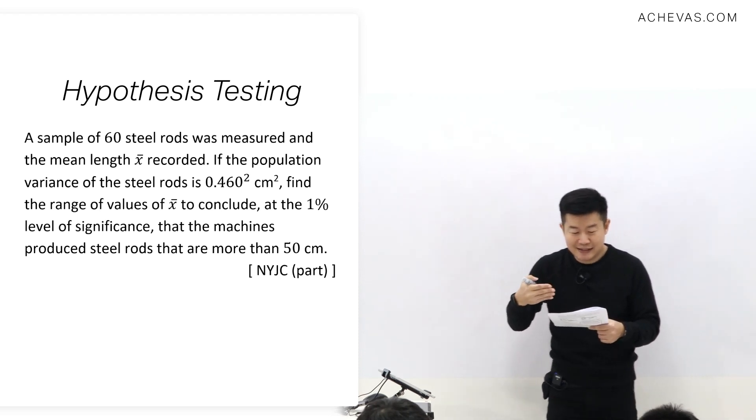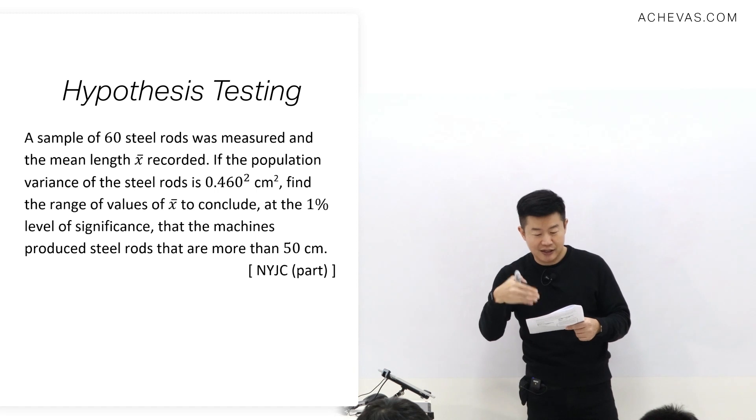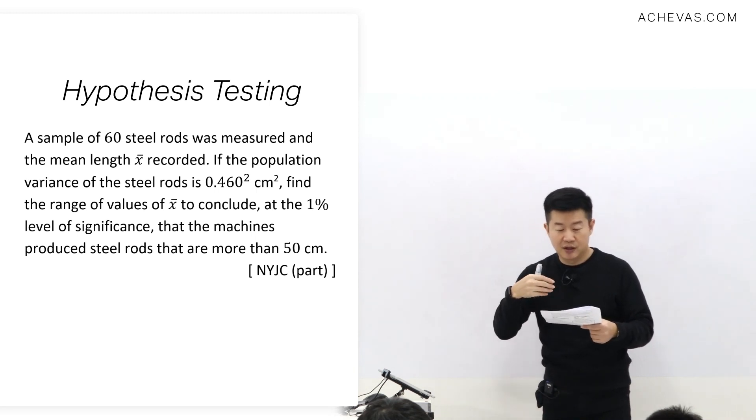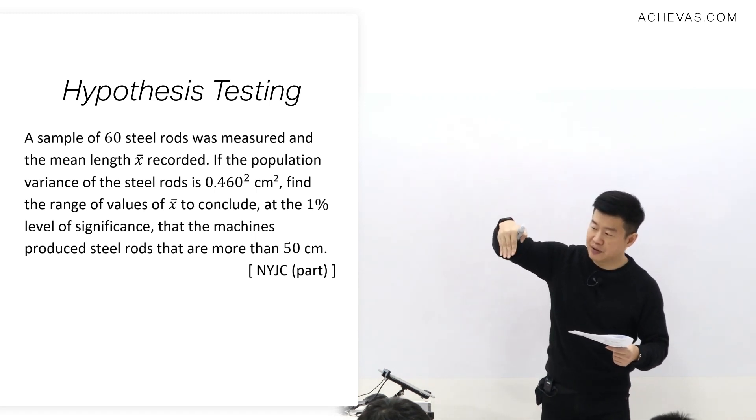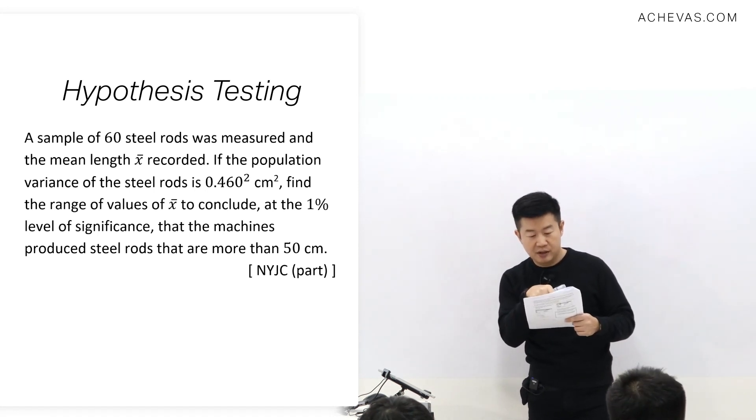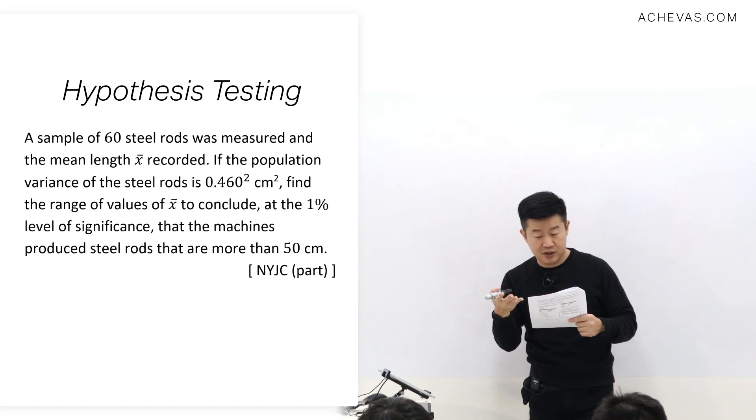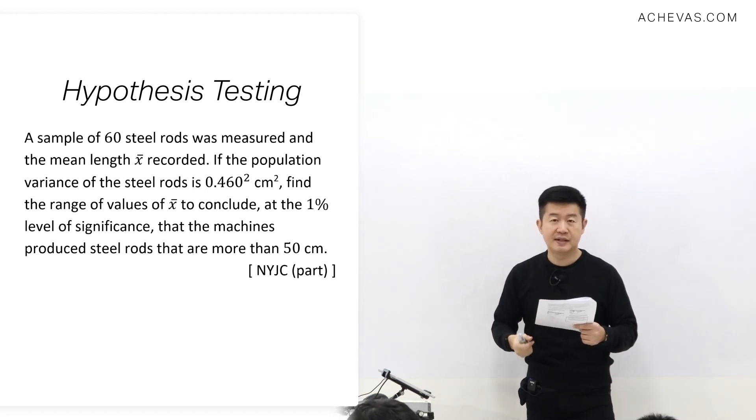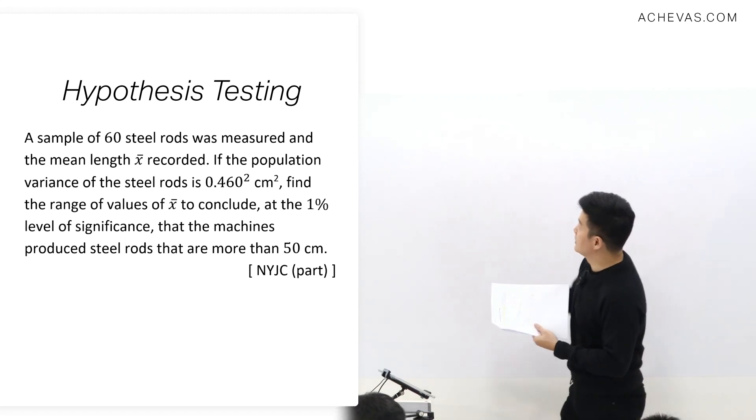I don't know whether you can really sense the change in this question because in this question, you don't go through the hypothesis test and derive at a conclusion. The conclusion is already told to me that there is sufficient evidence that the steel rods, the length of the steel rods, are more than 50 cm. So the scenario is this.